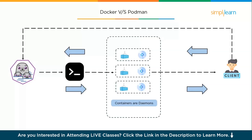Third, Docker CLI compatibility: Podman mimics Docker's CLI. Commands like 'docker run', 'docker build', 'docker ps' work with Podman too — just replace 'docker' with 'podman'. This makes switching from Docker to Podman almost painless. Fourth, pod-concept support: Podman integrates the Kubernetes pod concept natively. It can group multiple containers into a pod sharing the same network namespace, which is perfect for simulating Kubernetes locally or building complex microservices architectures.